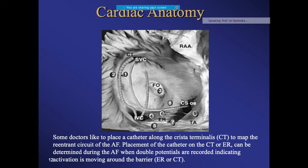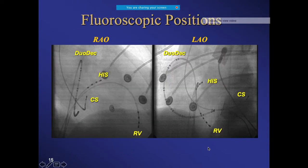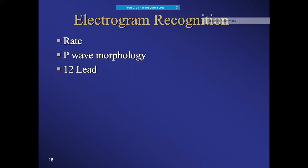Some physicians use modifications, such as a longer right atrium catheter that extends into the coronary sinus. It is very important not just to perform the procedure, but to understand what is happening - including recognizing the arrhythmia on the ECG.